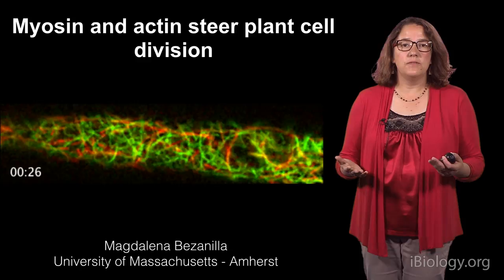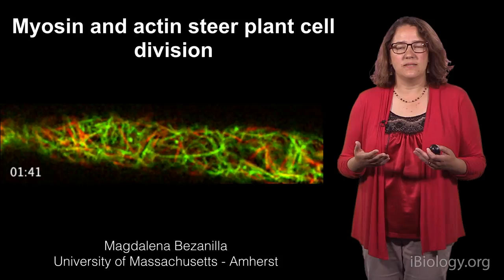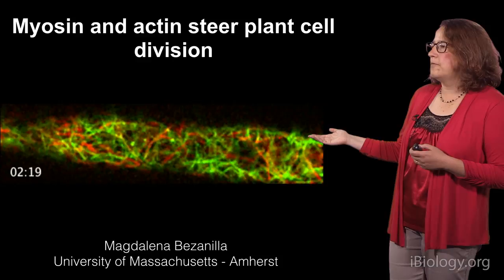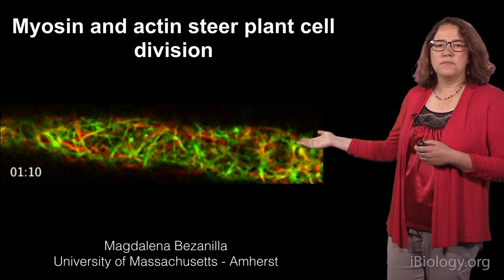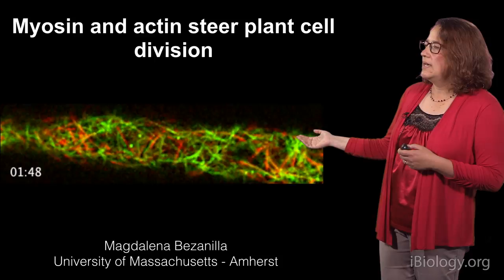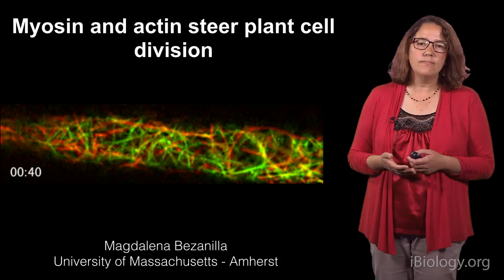Positioning the cell division plane is very important because it ultimately dictates the shape of the cell. This is fundamentally an interest in the lab because my lab studies the molecular basis of cell shape. This movie I'm playing for you is a movie of the cytoskeleton underneath the plasma membrane of a filamentous cell within the moss Physcomitrella patens, which is the organism that my lab works on. In red you see microtubules and in green you see actin filaments. What I want you to take away from this movie is just how beautifully complex, intricate, and dynamic this cytoskeleton is — constantly remodeling.